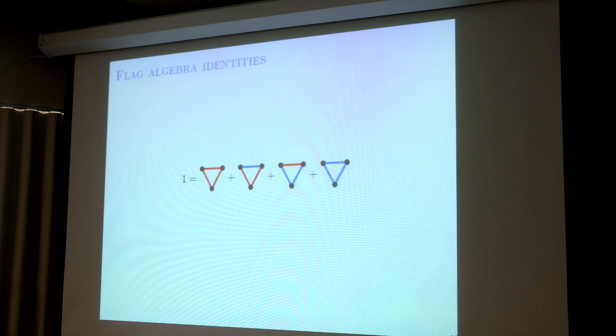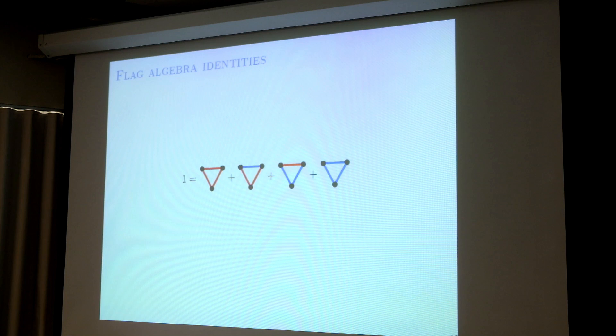So G is a complete graph with edges being two-colored. You can also think of G as a graph where red edges mean edges and blue edges mean non-edges. Instead of just saying one, you can ask more. For example, what is the red edge density of a graph G?